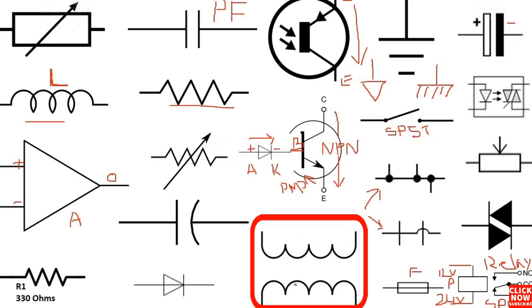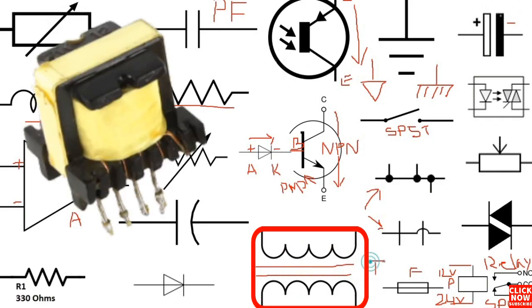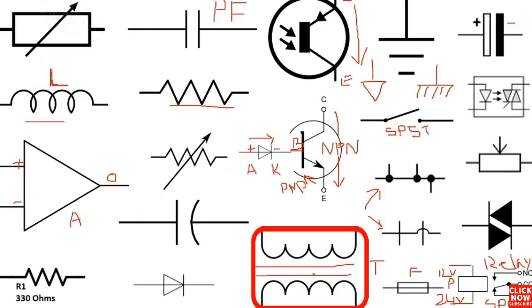Here we have the transformer. We have two inductors, which means this is a transformer. You can find an iron transformer — as you can see, inductors with iron between them. The transformer contains a primary winding and a secondary winding.